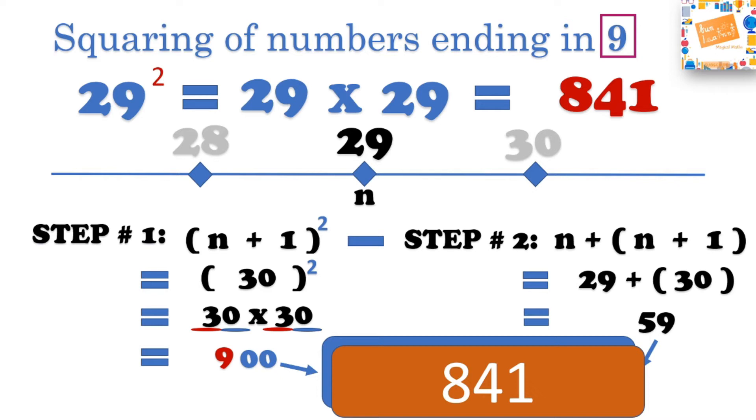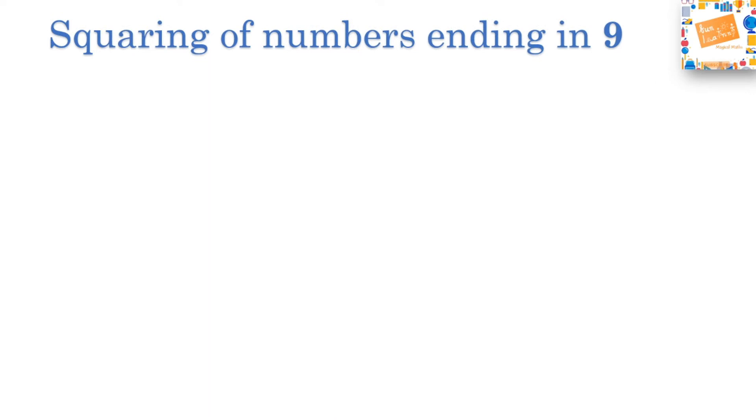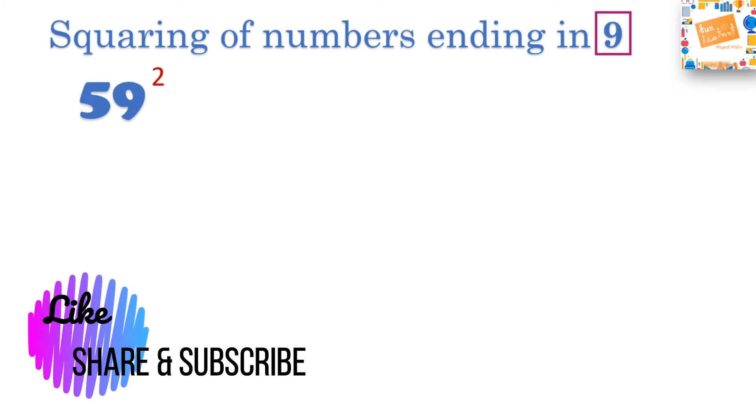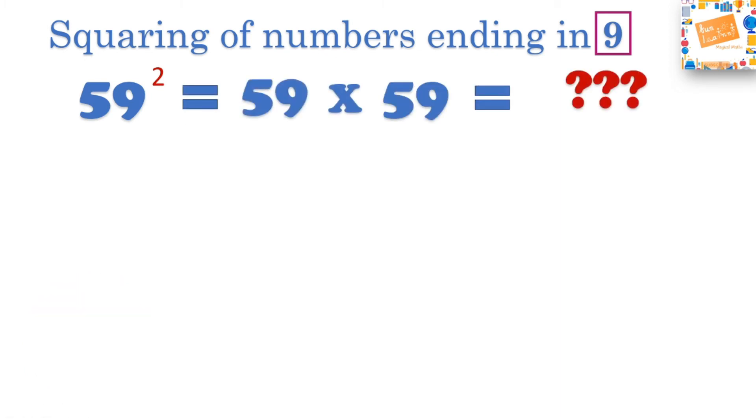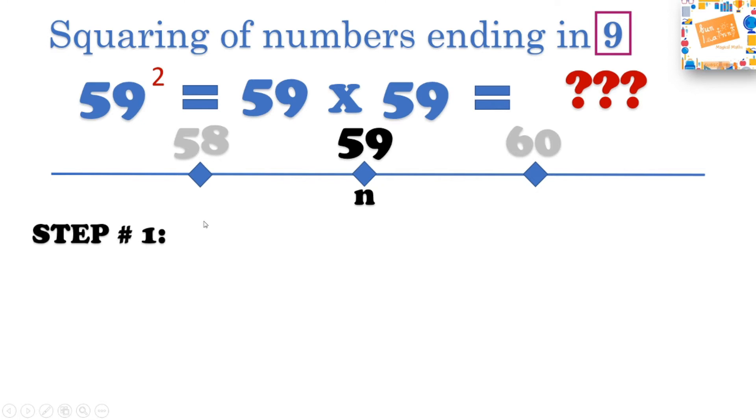Let's try another example of squares of numbers ending in 9. Let's take a slightly bigger number like 59. So 59 square is 59 times 59. Let's find out what this answer is. Again with 59's position, let me note what is before and after 59. I have my nearest 10 at 60. So here 59 is n, it's our main focus area.